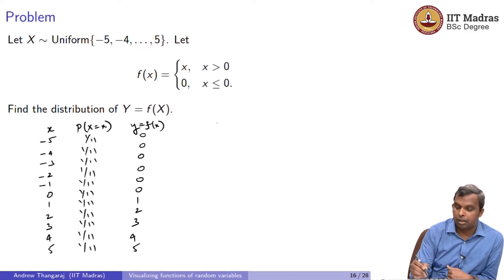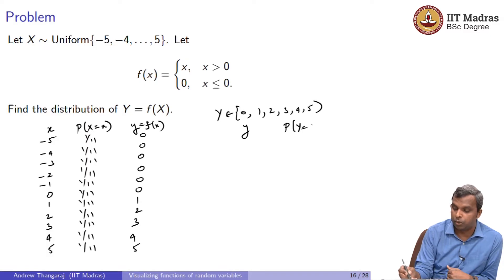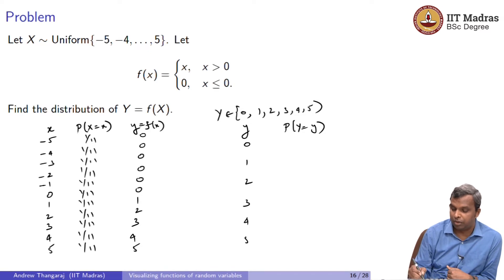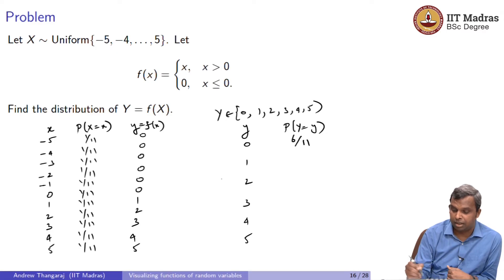Notice how things change. Y takes values 0, 1, 2, 3, 4, 5. Writing the distribution table for Y — probability of Y equals y — we have: for Y=0, we add all those 1/11s together, getting 6/11. For Y = 1, 2, 3, 4, 5, each probability is 1/11.